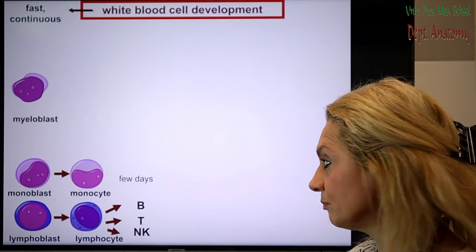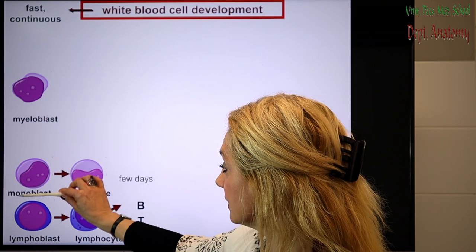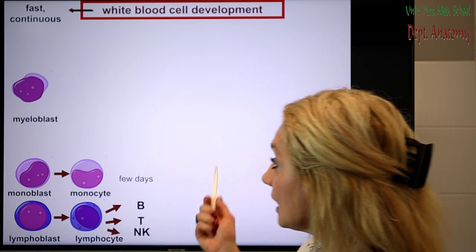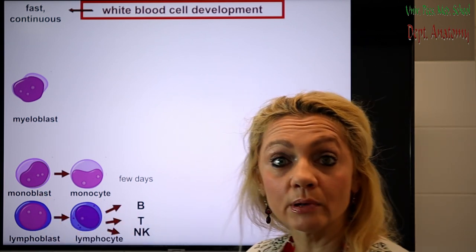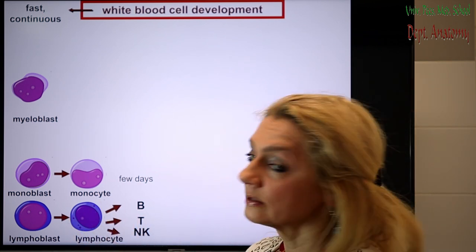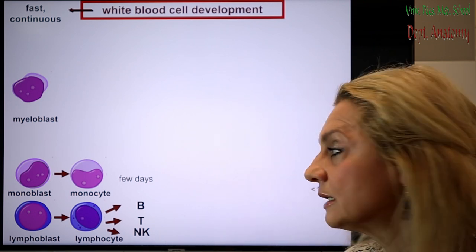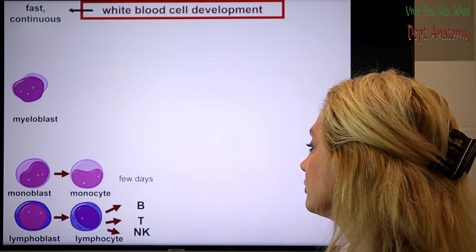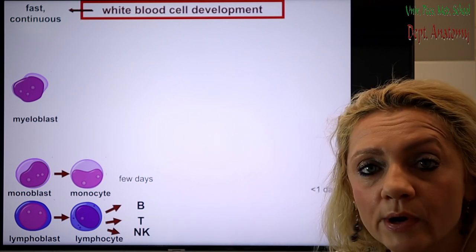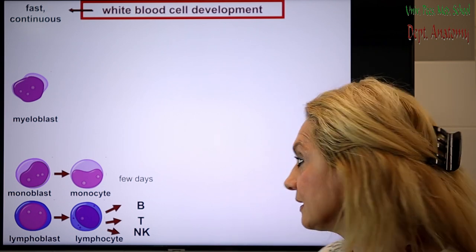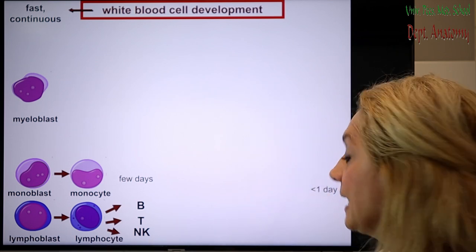Now let's go on to see the white cell development, which is a little more complicated. We have different types of white blood cells: the granulocytes, the monocytes, and the lymphocytes. They come from blast cells. Lymphocytes come from lymphoblasts and monocytes come from monoblasts. The lymphoid line separates from the rest very early during the commitment and differentiation process. We have T, B, and NK cells; how they develop further in the thymus or in a separate compartment of the bone marrow we will learn next semester when we do the lymphatic tissue.